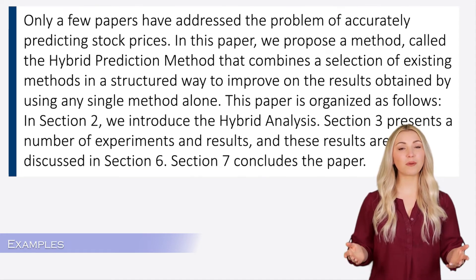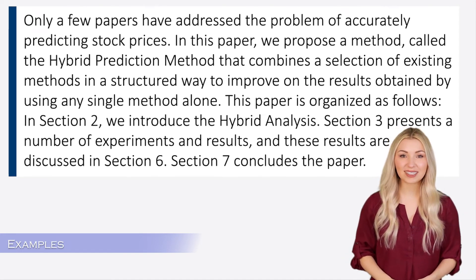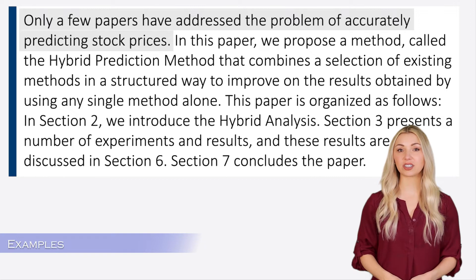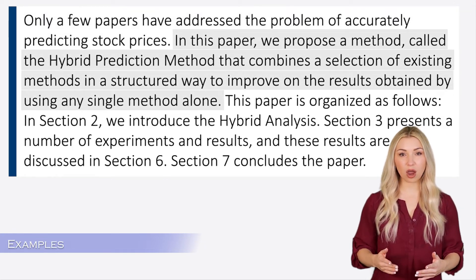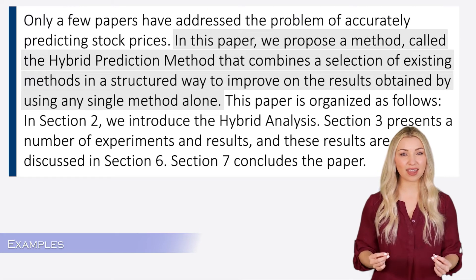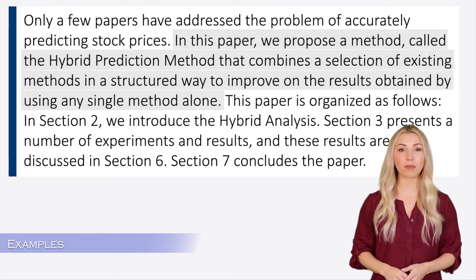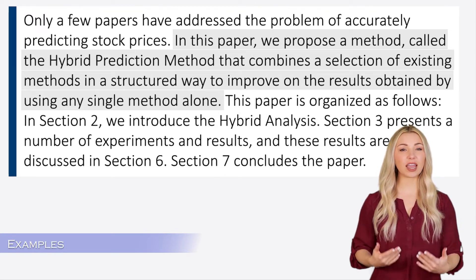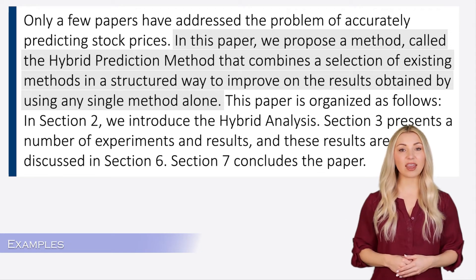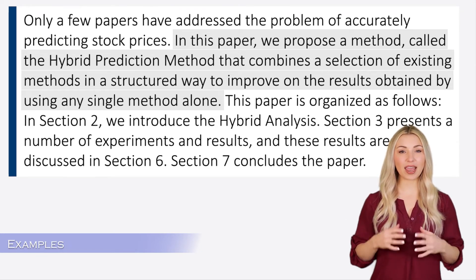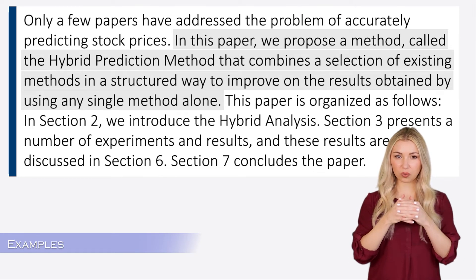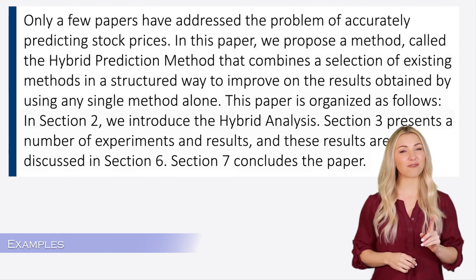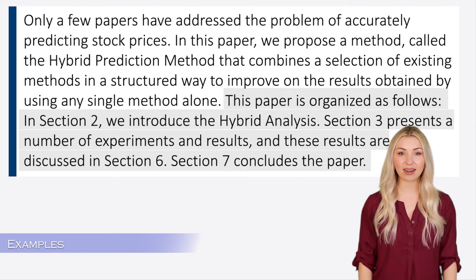Here is an example from a computer sciences research paper. The authors establish the research gap by saying that there aren't many papers on the topic of stock price prediction. Then they explain what they are proposing — a new method called the hybrid prediction model. They provide a brief breakdown of their method, explaining how they are combining multiple methods in a structured way to improve the overall prediction accuracy of stock prices. Finally, they finish off the section by providing the outline of the paper.